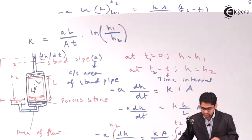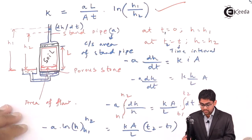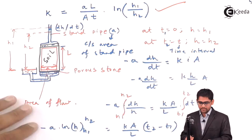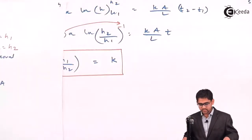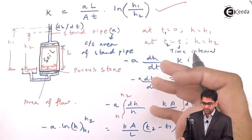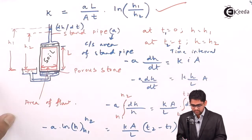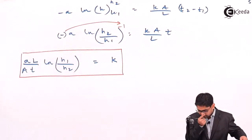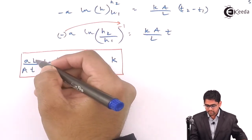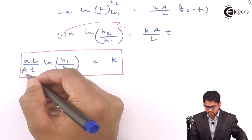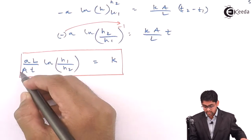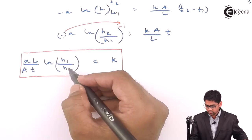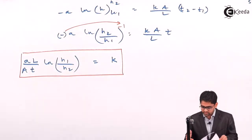This is the same formula — aL divided by At times ln(h1/h2) — but you must know what is small a and what is capital A. Capital A is the area of flow through the soil specimen, and small a is the area of the standpipe. Even if you don't remember the formula, you can derive it from the basic concept: Q equals KIA, equated to the rate at which the head is depleting from the standpipe. From the given data, you can calculate all these parameters.